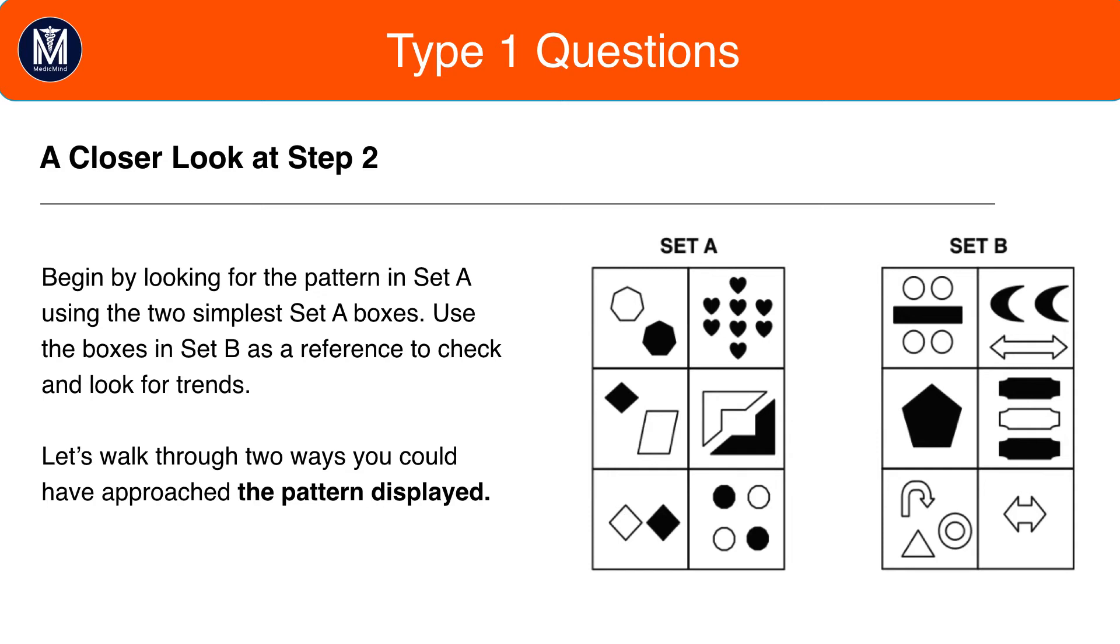Therefore, when you pick the simplest box in Set A, have an open mind and compare it to Set B, the simplest box in Set B, and the second simplest box in Set A at the same time.